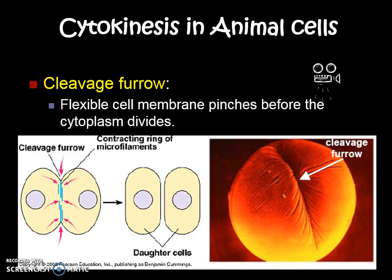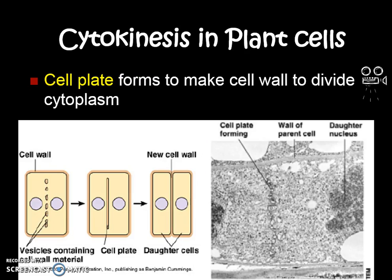In plant cells, this pinching action can't happen because they have a cell wall outside the cell membrane — it's too firm. Instead, little parts of cell membrane and cell wall called cell plates form in the middle and start to fuse or bond together until a new wall forms in the middle. So no pinching happens in plant cells.